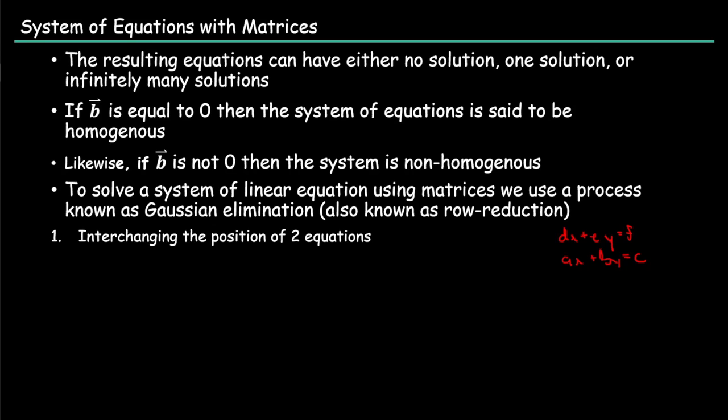Another thing that you can do with row reduction is multiply one equation by some non-zero constant. Using this set of equations that we have here, we can technically multiply the bottom part, multiply all this by some constant, say G.